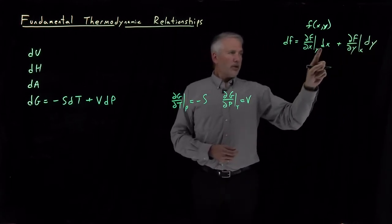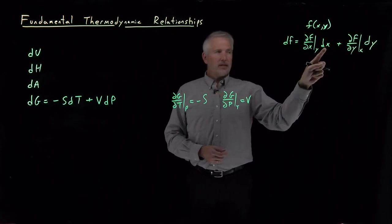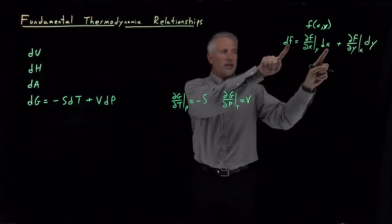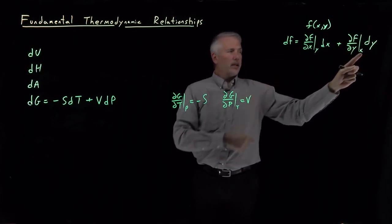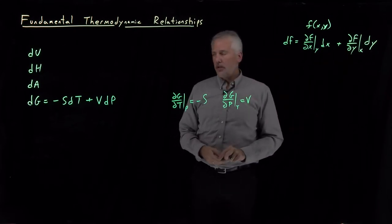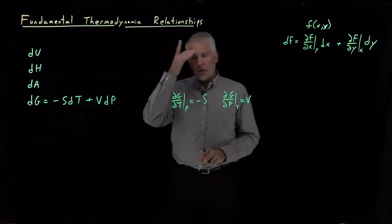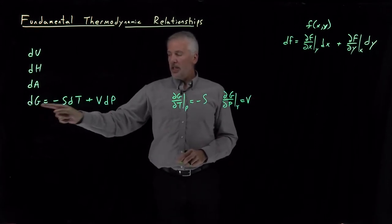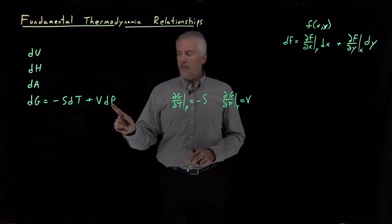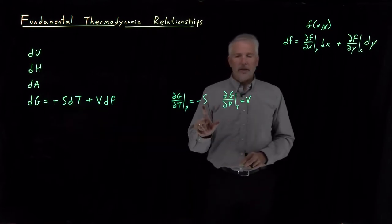Crucially, the coefficient that's in front of the dx tells us this derivative df/dx. The coefficient in front of dy tells us df/dy while holding the other variable constant. So if we just look at these fundamental equations, we can read directly off of them the dG/dT at constant other variable, at constant p, that's equal to this coefficient of negative s.